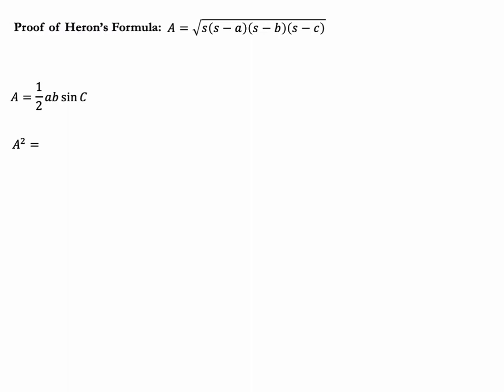If you square that right-hand side, you square one-half, square a, square b, square sine of c, and you get one-fourth — that's a half times a half — a squared, b squared, and sine squared of c. Now, pause the video again. How can we rewrite sine squared of c? What can we do? Think of your trig identities. Go ahead, pause it and try it, and then press play and we'll solve it together.